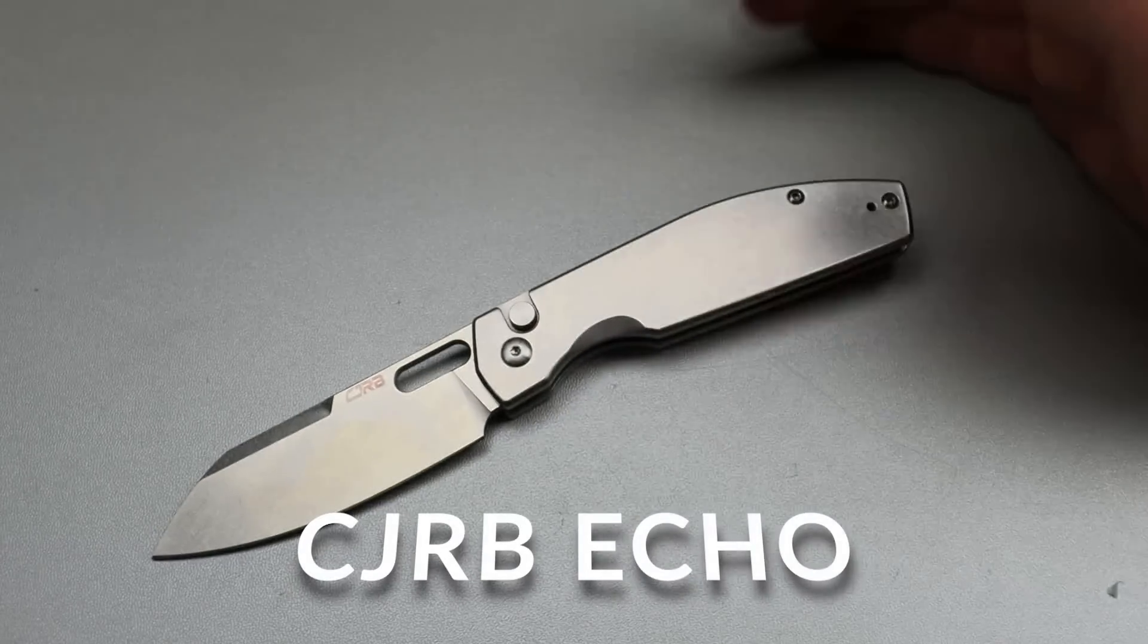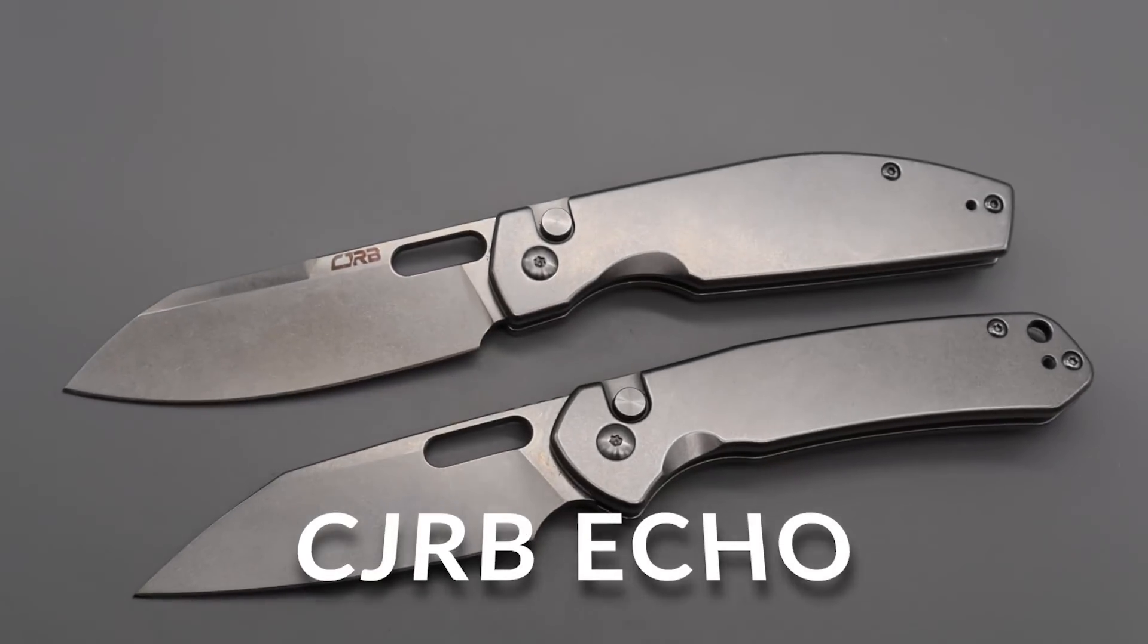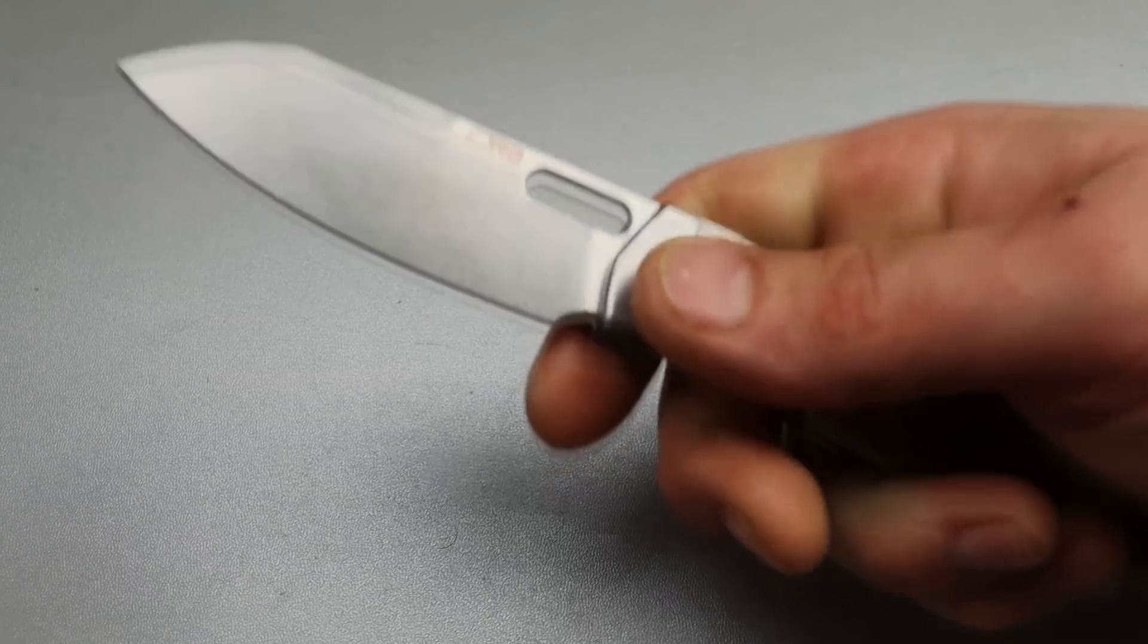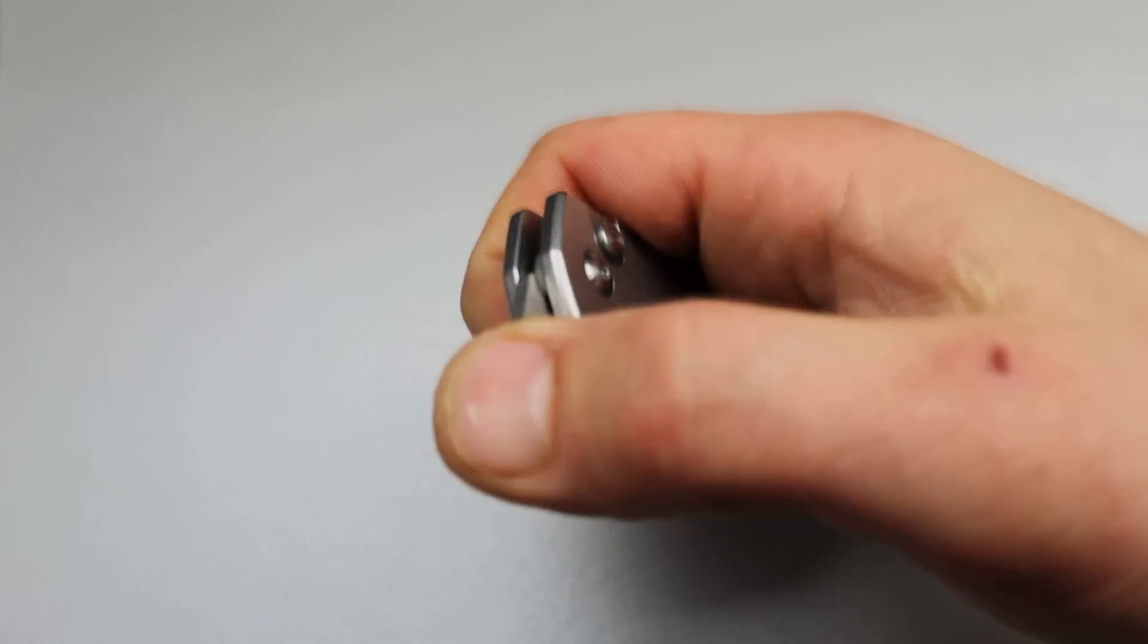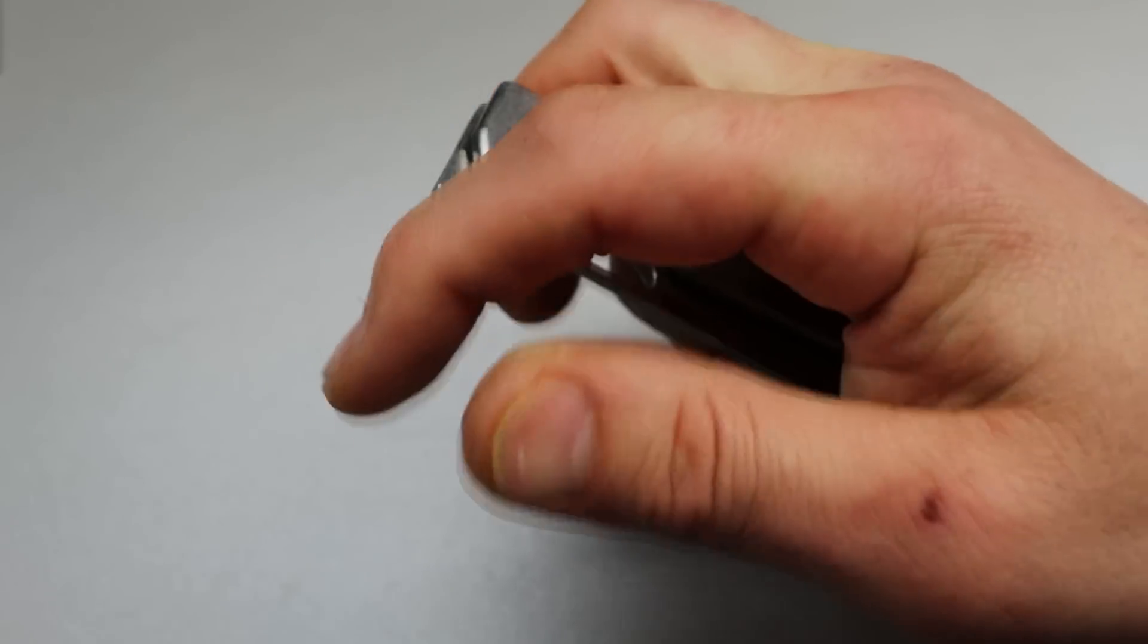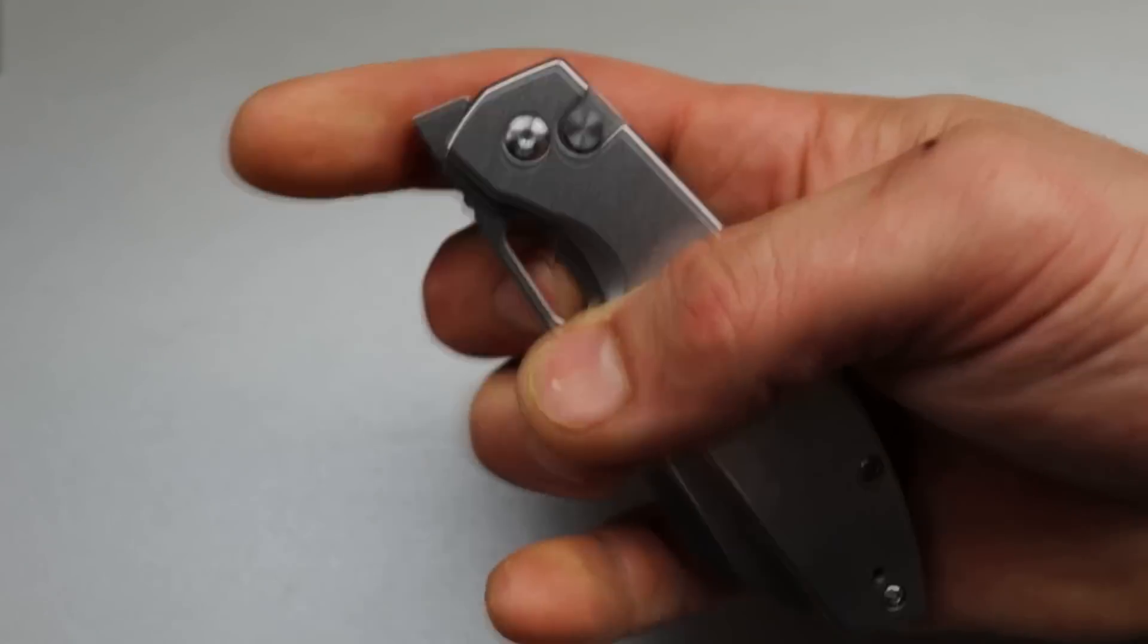Now, the next one I like even better, and that's the Echo, the CJRB Echo. It's a little bit more comfortable in hand to me, a little bit larger. The button lock is rock solid on this. Even the Pyrite is rock solid, but I like that it has multiple forms of deployment instead of just one.